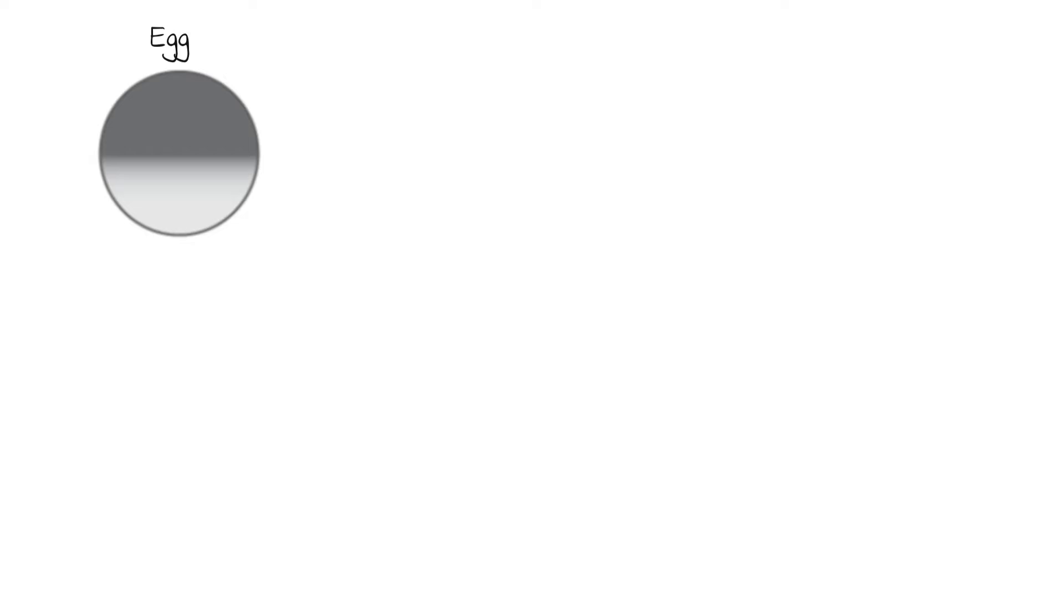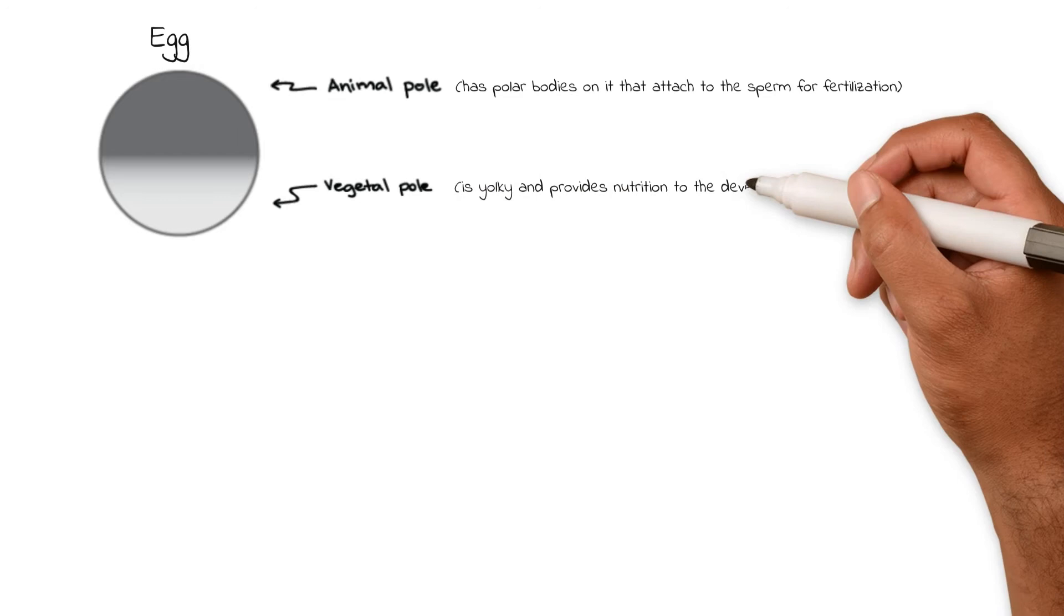For some context, an egg has an animal pole and a vegetal pole, creating two distinct hemispheres in the cell. The animal pole has polar bodies that attract and attach to sperm and start the fertilization process, while the vegetal pole is yolky and provides nutrition for the rest of the cell.